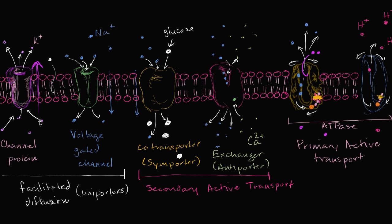Let's talk about all of the different ways that molecules can be transported across a cellular membrane. Perhaps the most basic, the most passive of the passive transports would be straight up diffusion. If you have a small enough molecule — let's say molecular oxygen — it's small, it doesn't have any charge, it has no polarity, it will be able to diffuse down its concentration gradient through the cellular membrane.